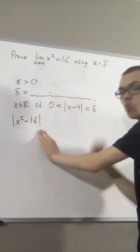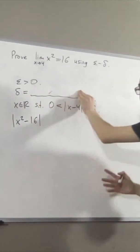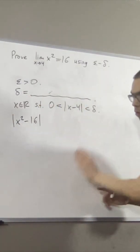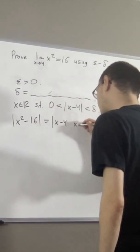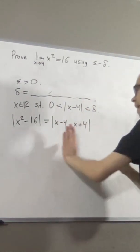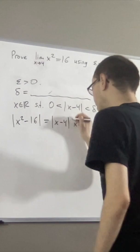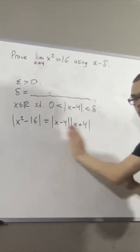And in the process of doing that, we're going to figure out what we should choose delta to be. Now, we know that x squared minus 16 is the same thing as x minus 4 times x plus 4, and the absolute value of a product is the same as the product of absolute values, so we get this.